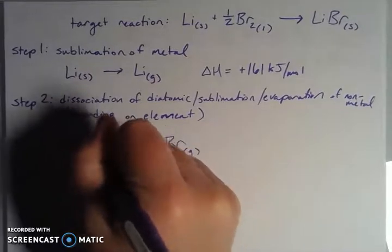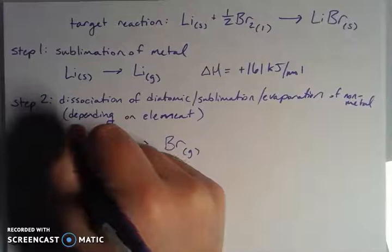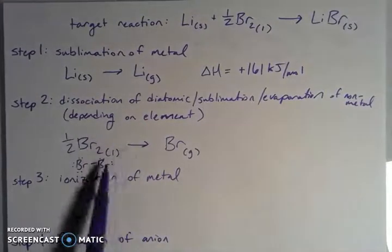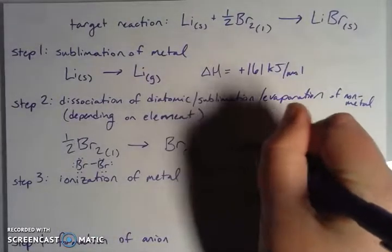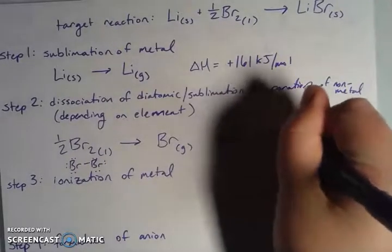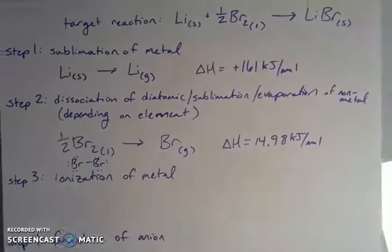I had to do two pieces to this. I had to put in enough energy to break this bond, because if I'm thinking about the Lewis dot structure of this thing, I have two bromines bonded together. I had to not only break this bond, but I also had to go from the liquid phase to the gas phase. So there's two pieces to that. When I did that, the amount of energy is 14.98 kilojoules per mole. Again, look-up-able.